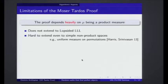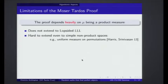The main downside of the Moser-Tardos proof is that it really depends very heavily on mu being a product measure — it doesn't work at all if you try to apply it on non-product measures. In particular, it doesn't extend to the lopsided LLL. You really need to have independence as opposed to one-sided dependency. And even if you have independence, it is very hard to extend even to simple non-product spaces.